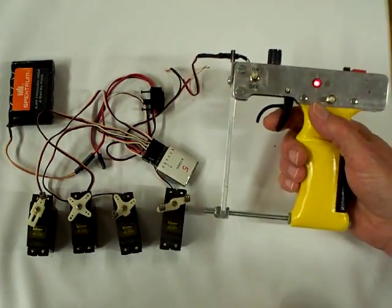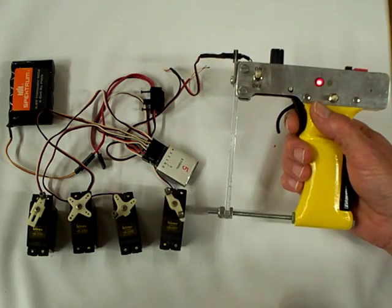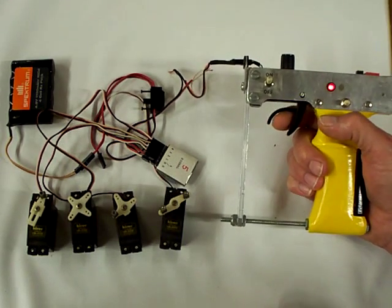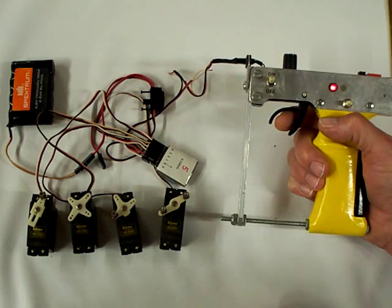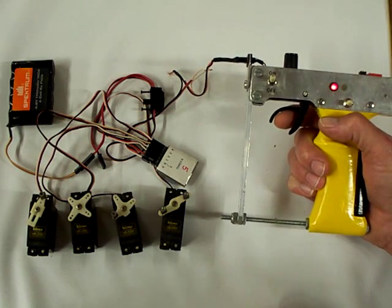The trigger here operates the throttle. Push the trigger forward, and it'll toggle the second servo.